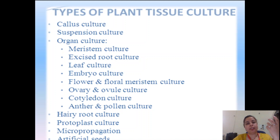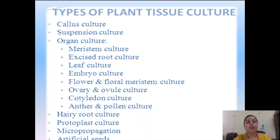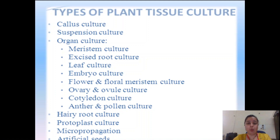Organ culture — as the name suggests, different organs of the plant are taken. This includes meristem culture (the tip of shoot and root, which are fast-growing cells), excised root culture, leaf culture, embryo culture, flower and floral meristem culture, ovary and ovule culture, cotyledon culture, and anther and pollen culture. Other types include hairy root culture, protoplast culture, micropropagation, and artificial seeds.